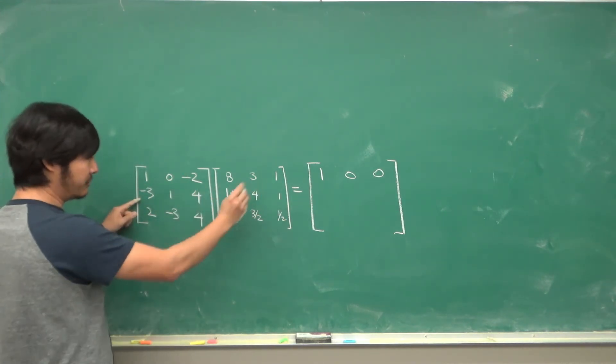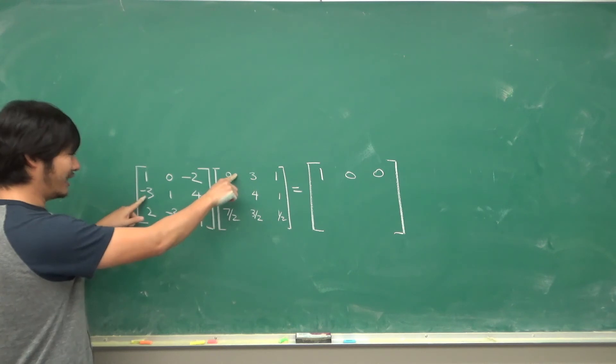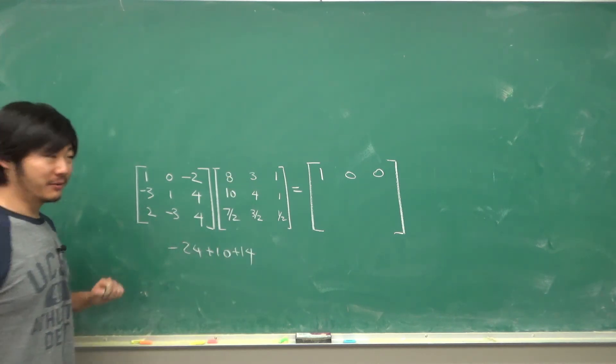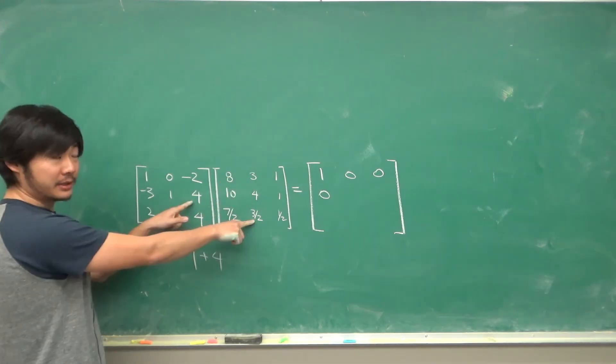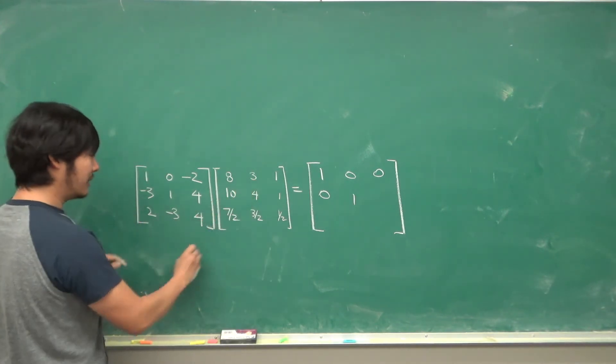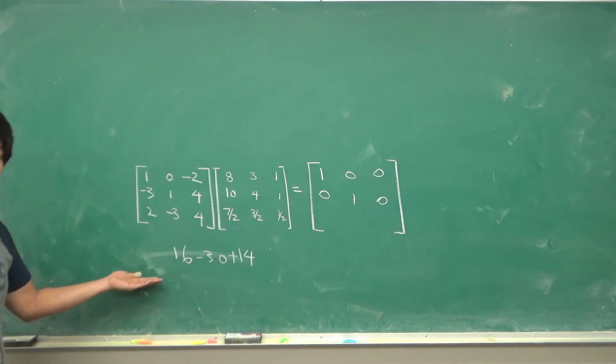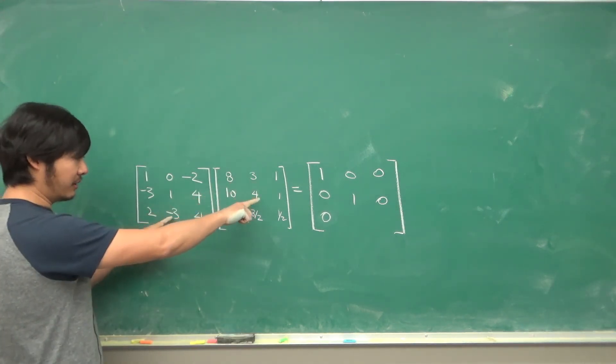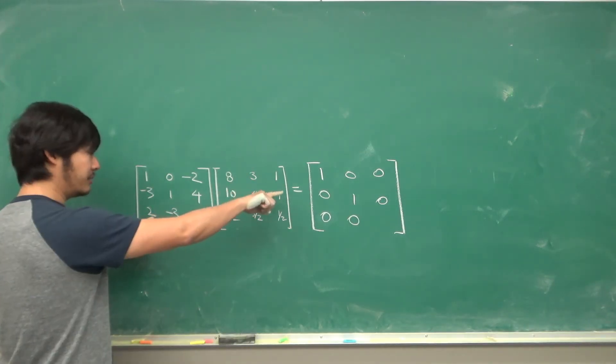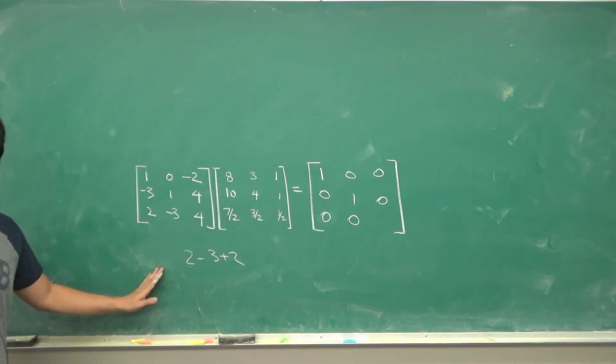Second row in the columns... Negative 24 plus 10 plus 14 is 0. Negative 9 plus 4 plus 6 is 1. Negative 3 plus 1 plus 2 is 0. 16 minus 30 plus 14 is 0. 6 minus 12 plus 6 is 0. So 2 minus 3 plus 2 is miraculously 1. So we did our computation correctly.